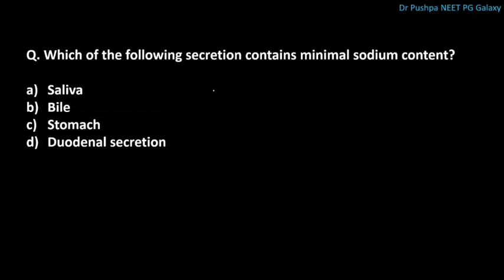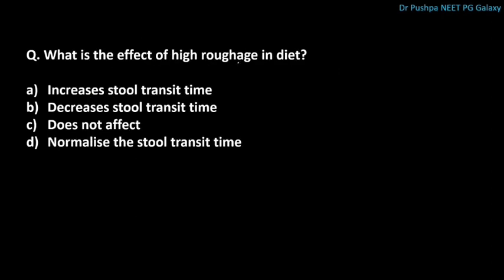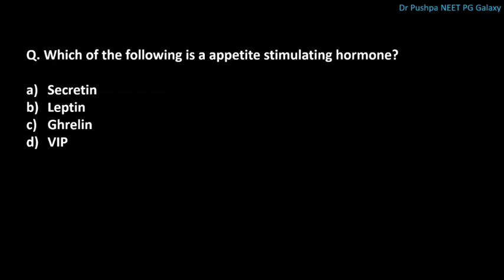Which secretion contains minimal sodium content? The correct answer is saliva. Which substance gets absorbed fastest from the intestine? The correct answer is hexoses. What is the effect of high roughage in the diet? It increases the stool transit time. Which of the following is an appetite-stimulating hormone? The correct answer is ghrelin.